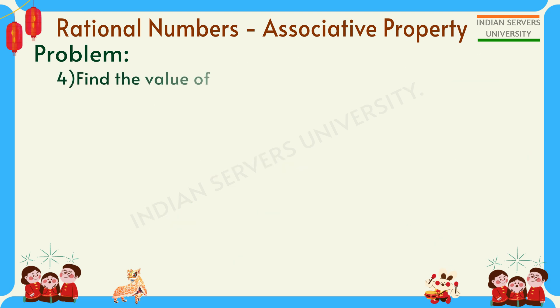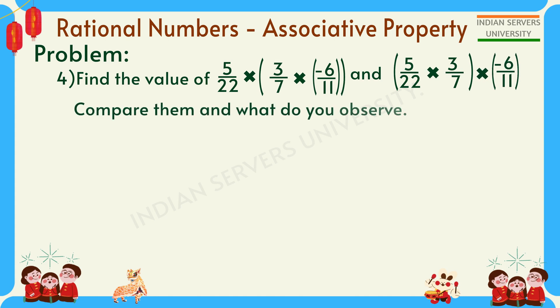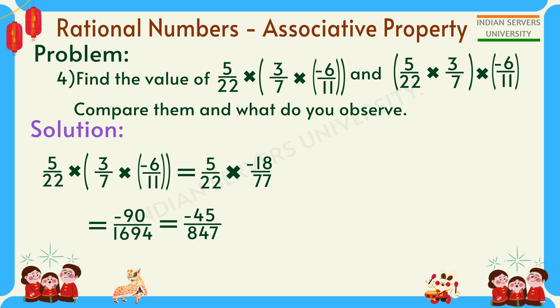Find the value of ((5/22 × 3/7) × (-6/11)) and (5/22 × (3/7 × (-6/11))) and compare them. For the first expression, solve the bracket: 3 × (-6) = -18, 7 × 11 = 77. So 5/22 × (-18/77). Multiplying: (-18) × 5 = -90, 22 × 77 = 1694. This gives -90/1694, which equals -45/847.